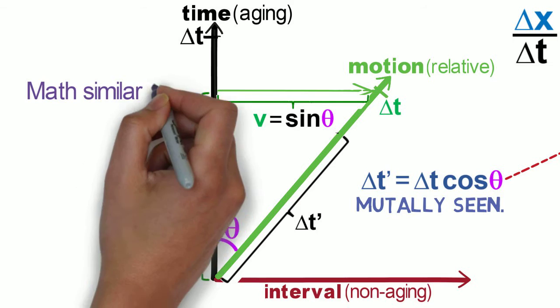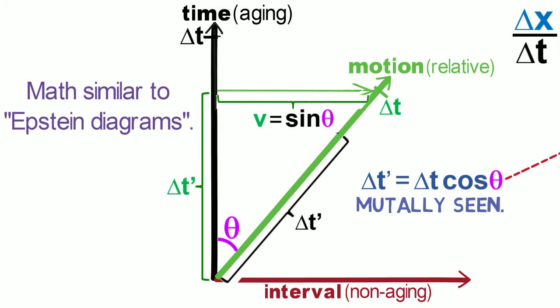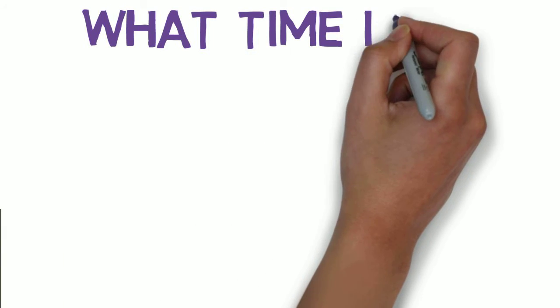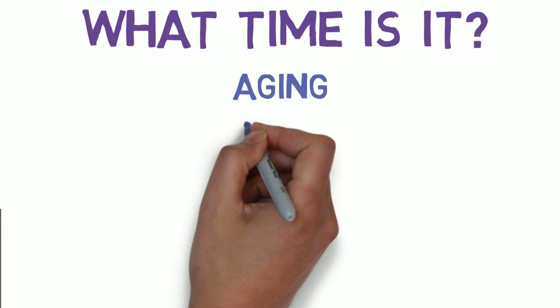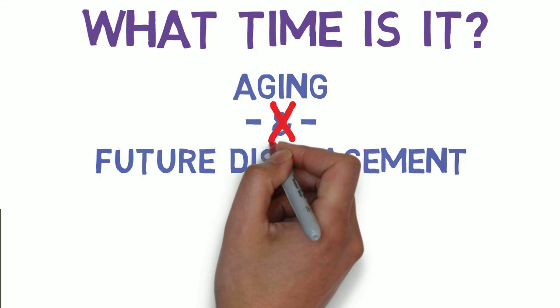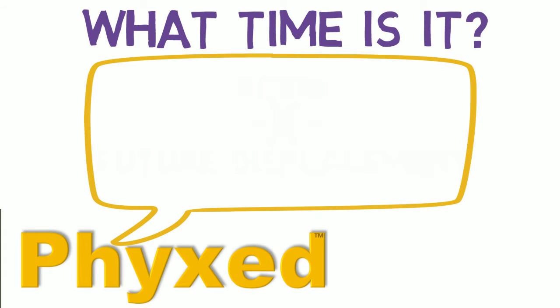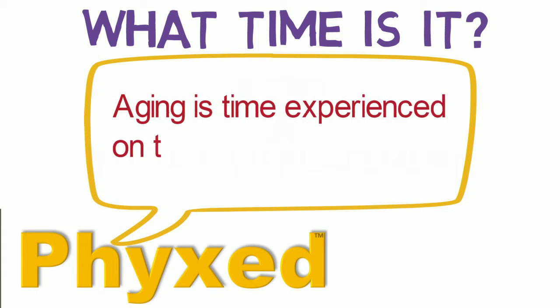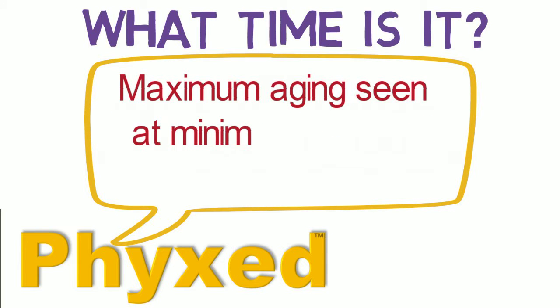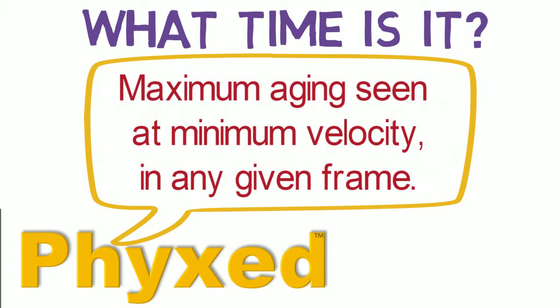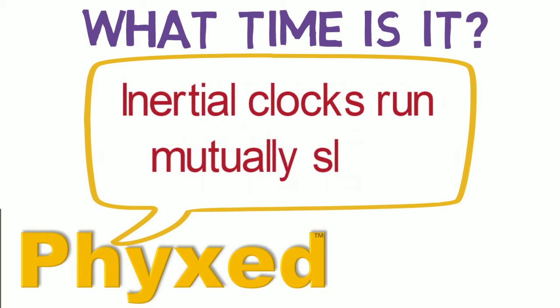The math was developed earlier for Epstein diagrams, but problems arose in his attempt to retain spatial coordinates. In summary, the word time commonly refers to aging and future displacement, which physics should not confuse. Aging is time experienced on the way to an invariant future. Maximum aging corresponds to minimum velocity and vice versa. Different inertial clocks run mutually slow.